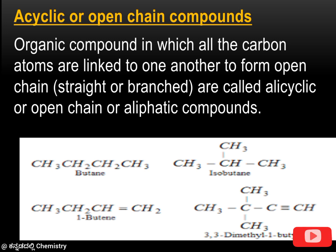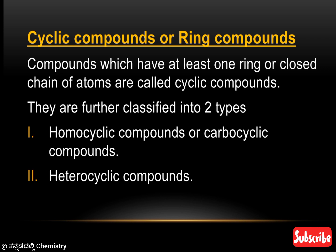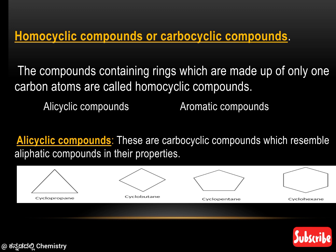The second type is cyclic or ring compounds, which have at least one ring or closed chain of atoms. Cyclic compounds are of two different types: homocyclic compounds, where the ring is made entirely of carbon atoms. Homocyclic compounds are further classified into alicyclic and aromatic compounds. In alicyclic compounds, the ring contains only carbon atoms with single bonds, for example cyclobutane.